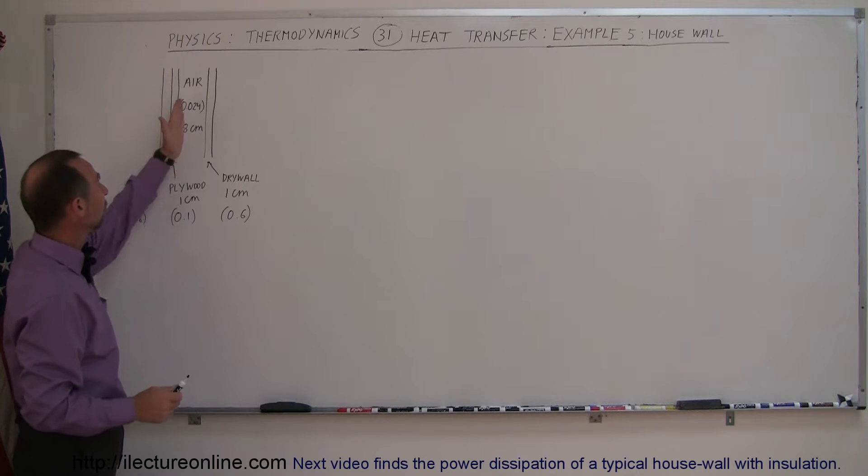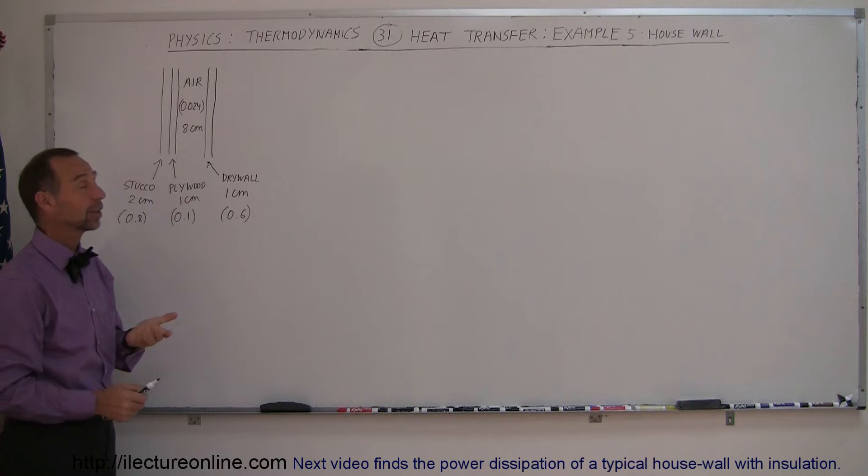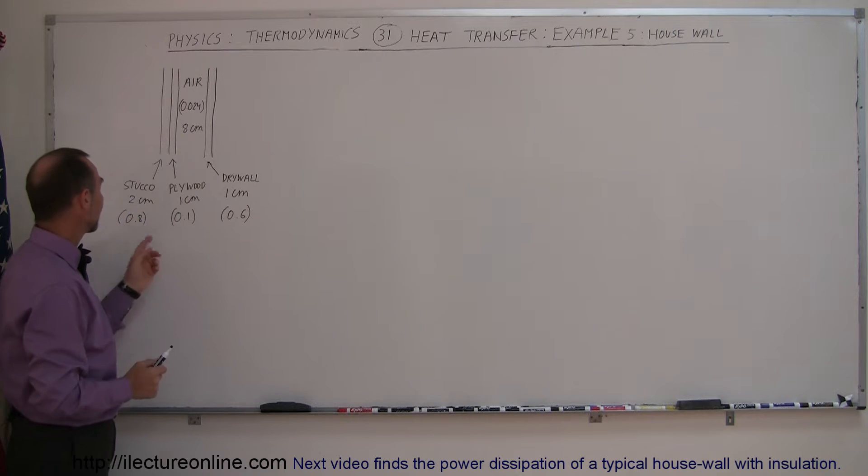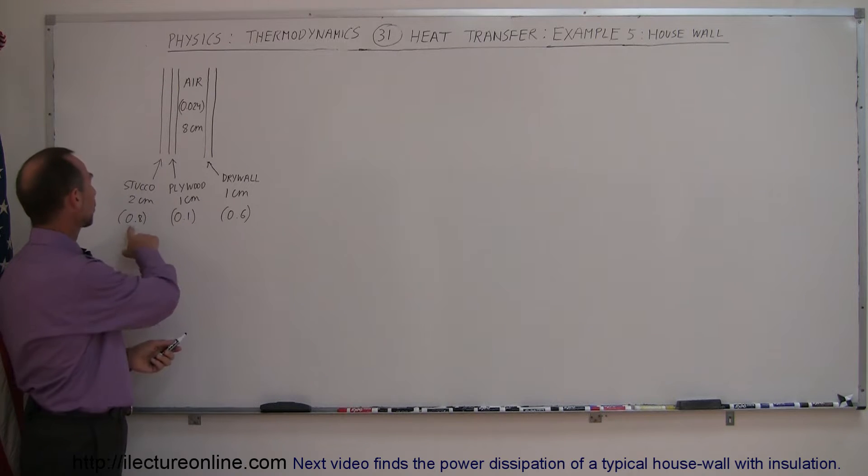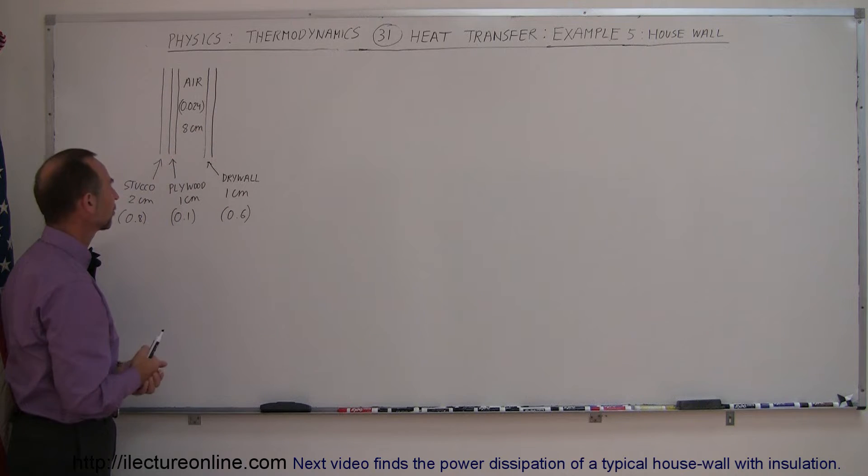And in some houses they even put insulation in the walls, and we'll do an example later on that shows the difference between a house that has no insulation versus a house that does have insulation. Here I put down the conductivity values for stucco, plywood, drywall, and air, and the thicknesses, typical thicknesses for these various substances.